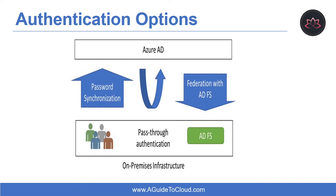Choosing an Azure AD authentication method is one of the most important first decisions you will make. You can choose cloud authentication, which includes Azure AD Password Hash Synchronization and Azure AD Pass-Through Authentication. Or you can choose federated authentication, where Azure AD hands off the authentication process to a separate trusted authentication system, such as on-premises Active Directory Federation Services, to validate the user's password.